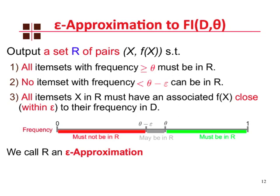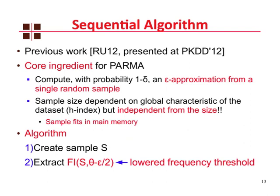At the core of PARMA, the core of our algorithm, there is previous work that we introduced and was presented at PKDD 2012 last month. It gives us a method to compute, with probability at least 1 minus delta, an epsilon approximation of the collection of frequent itemsets using a single random sample of the dataset. The sample size depends only on global characteristics of the dataset — that is, the h-index — and on epsilon and delta, but is independent from the size of the dataset, so the sample can fit into the main memory of the machine. The algorithm is very simple: we create the sample using the bound on the sample size and random sampling with replacement, and we extract the collection of frequent items from the sample using a lowered frequency threshold, theta minus epsilon over two, rather than theta.